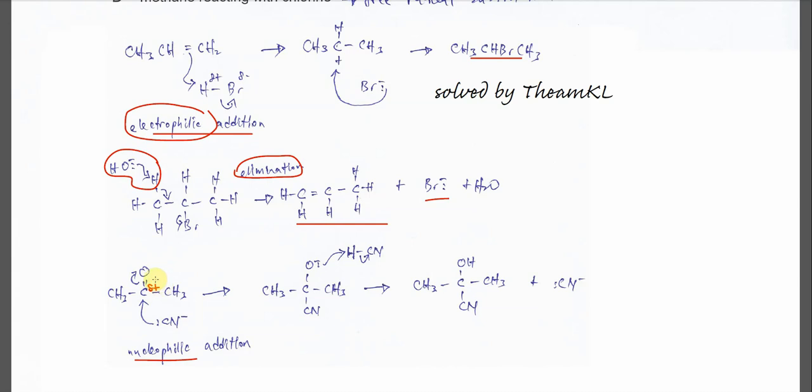And the pi bond will break. And this pair of electrons will move to the oxygen. And it will form oxide later here. After that, this oxide will try to attack or get a proton from the HCN. C-H bond breaks here. And these electrons will move to the carbon and form cyanide. So the cyanide regenerates.